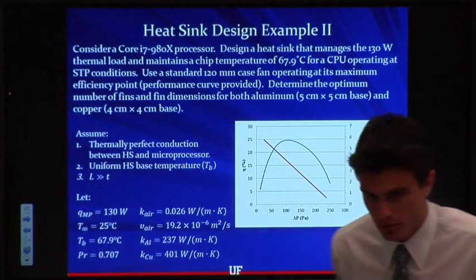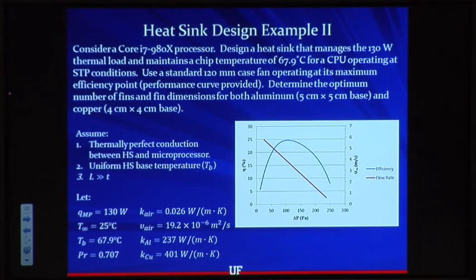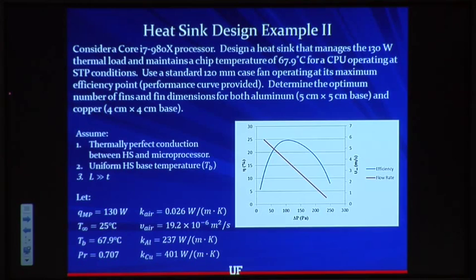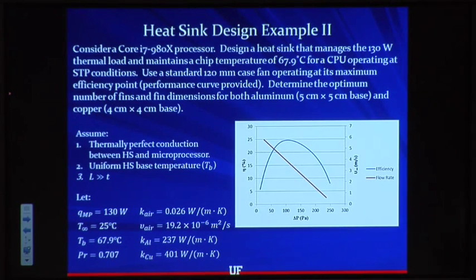Let's do a quick example. Last lecture we discussed a Pentium 4 2.8 GHz processor; this time we're looking at the i7-980X. This generates a thermal load of about 130 watts and needs to be kept at 67.9°C for optimum operation. We're using the same 120-millimeter fan, which means the same optimum delta-P of about 100 pascals. We'll do this analysis for two materials: aluminum — allowing a 5×5 cm base — and copper, with only a 4×4 cm base.